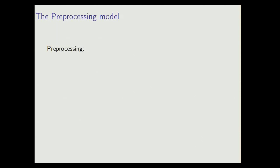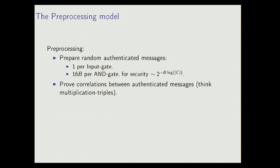Like the two previous talks, we live in this preprocessing model. And what we do in our preprocessing model is, essentially, just we prepare a lot of authenticated random messages, so bits with the MACs on them. Particularly, we need one for each input gate, and we're going to need 16B for each AND gate to get security 2 to the minus B times size log the size of the circuit. So this means that for very large circuits, this B parameter is going to be low, it's going to be something less than 10, but still, for the whole circuit, we're going to need quite a lot of these random authenticated messages. The second part of the preprocessing phase, we prove some correlations between these authenticated messages. I'm not really going to get into this, but you can think of something like multiplication triples for MPC.